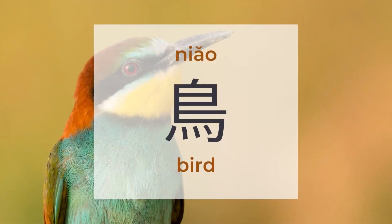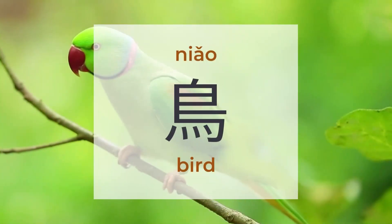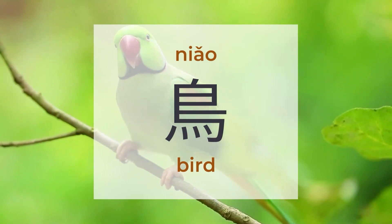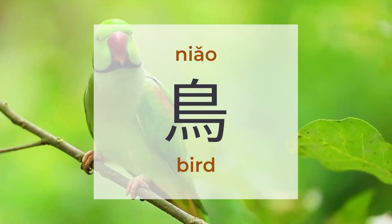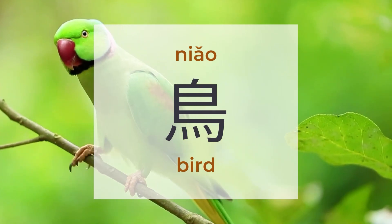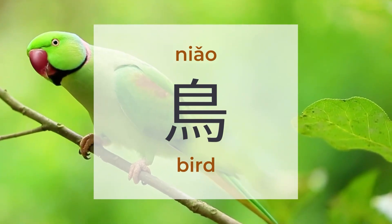鸟 means bird. There are around 750 characters to be found under 鸟. 鸟 is a pictogram with one form. 鸟 shows on the left, right, or bottom of characters.